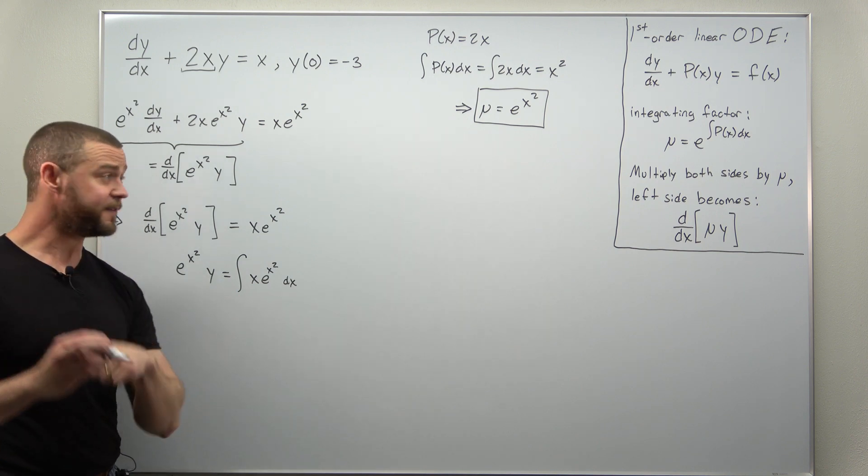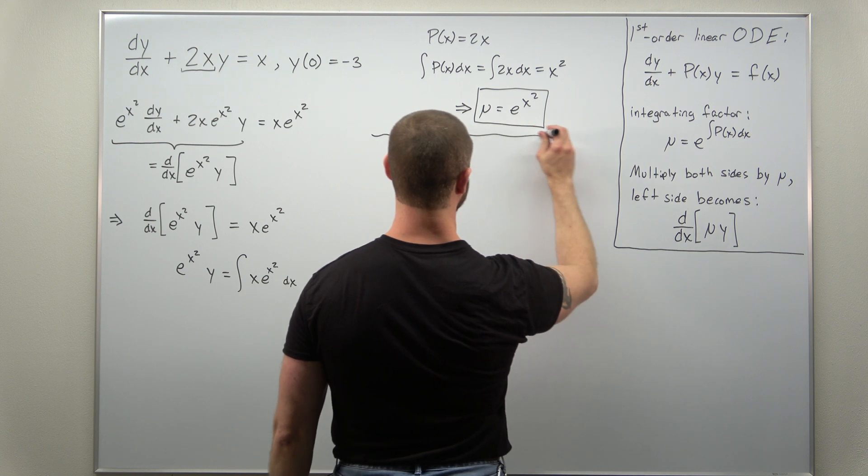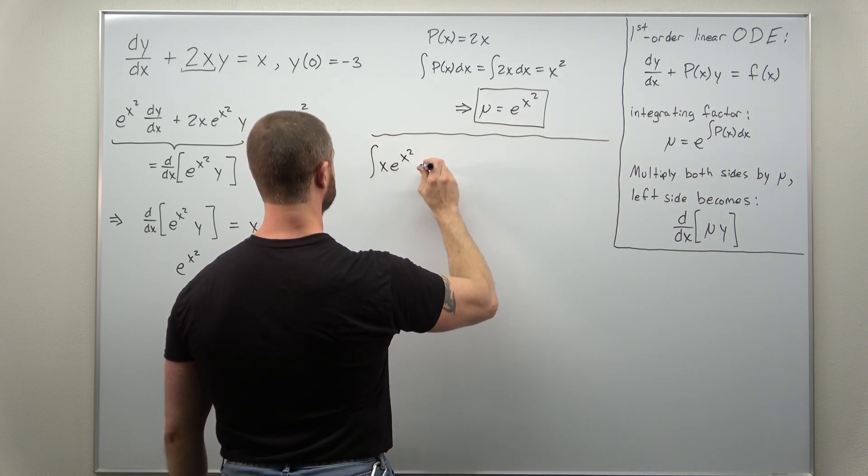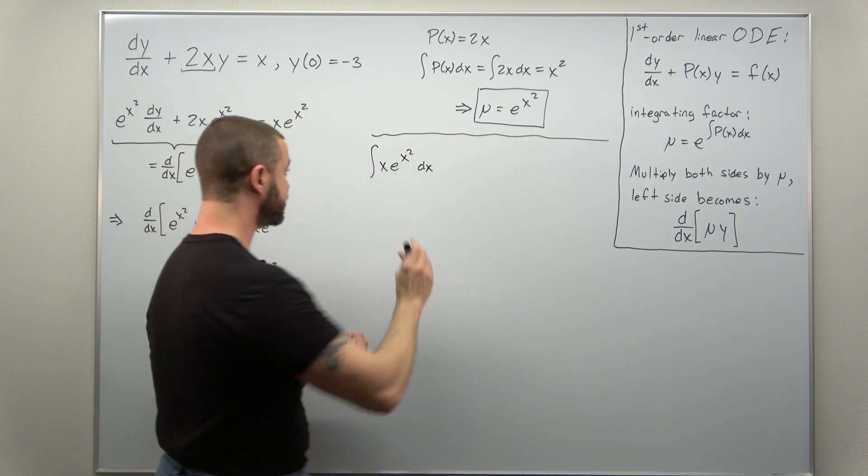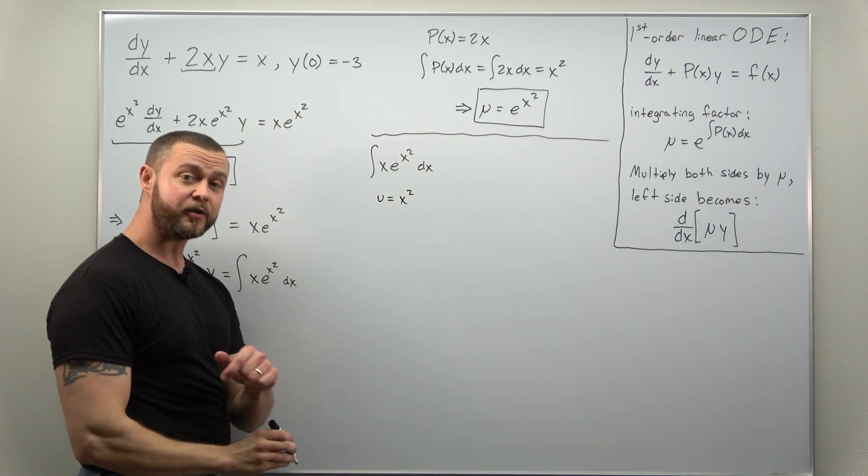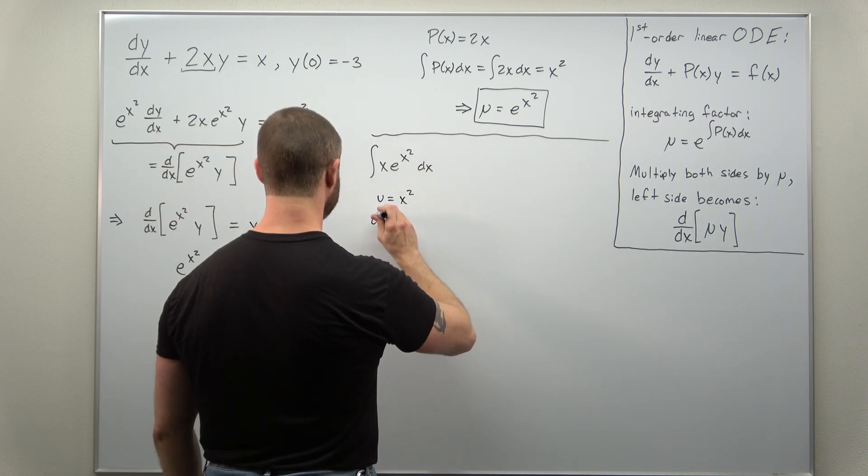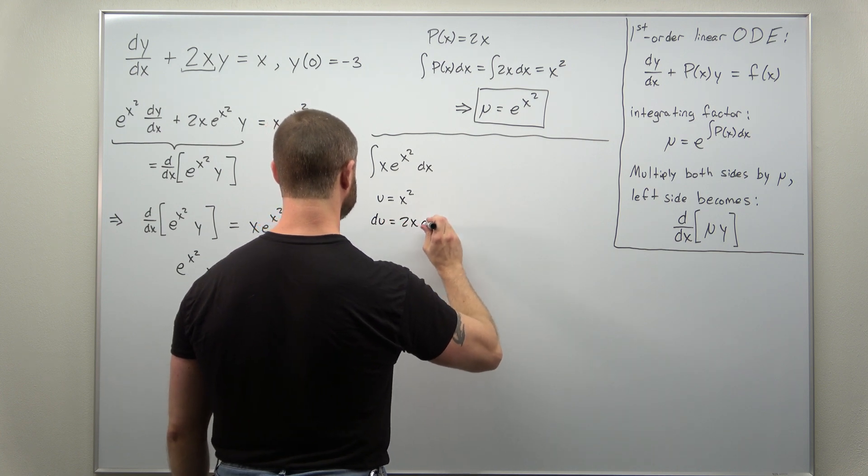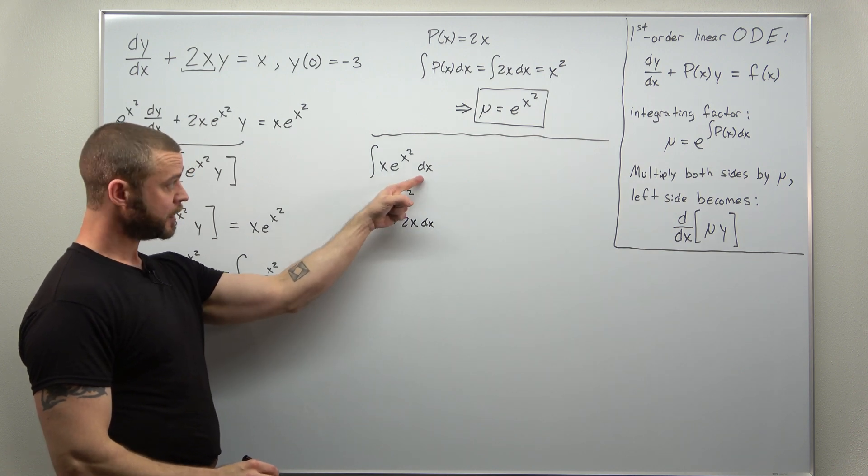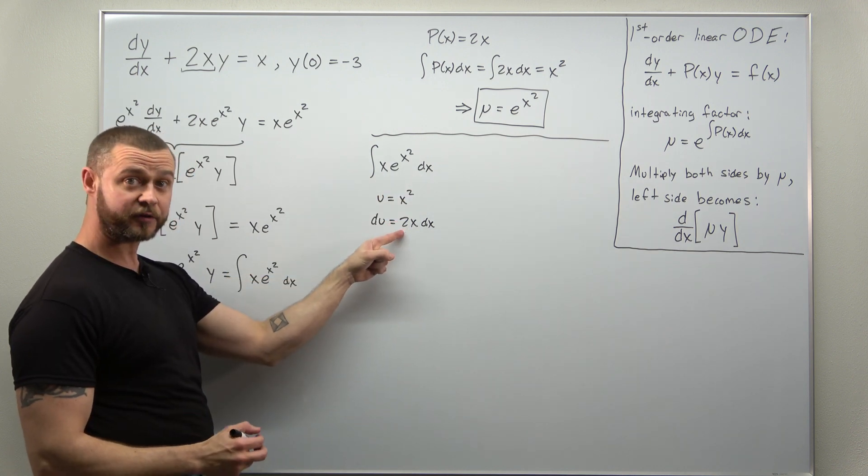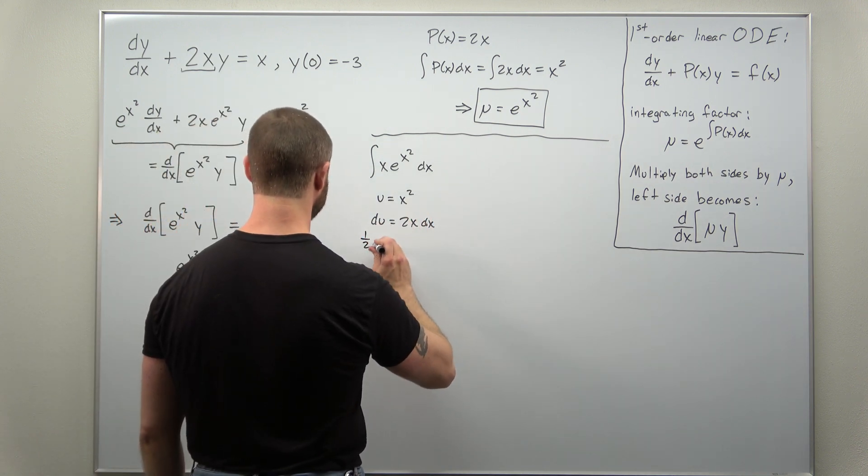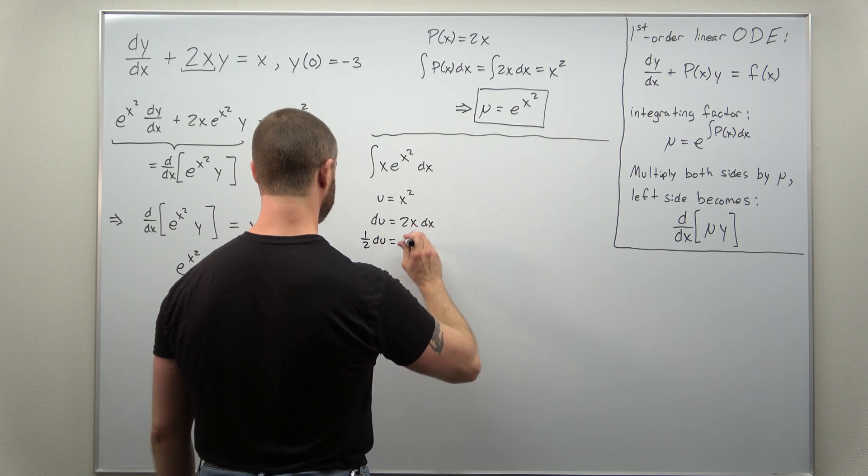This integral we can evaluate with a basic substitution. And it looks like we can choose u as x squared. We're going to calculate the differential du, which comes out to 2x dx. Our integral contains a factor of x as well as dx, but we're missing a factor of 2. So divide that over to the u side and write that as one-half du equals x dx.